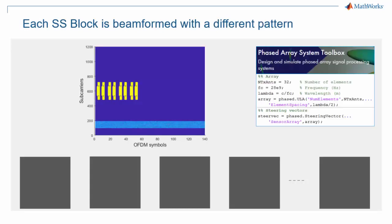Although the standard doesn't mandate it explicitly, it is widely expected that each SSB occurrence will be beamformed with a different pattern. This enables the GNodeB to scan the space and target the energy in successive directions.